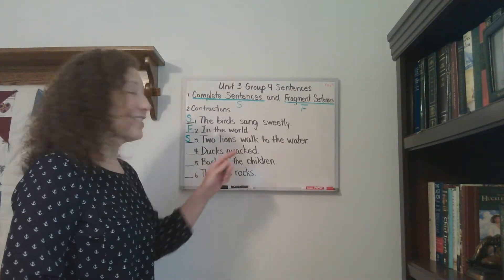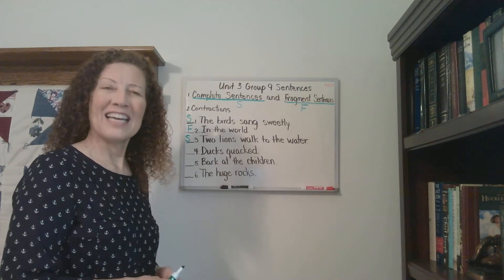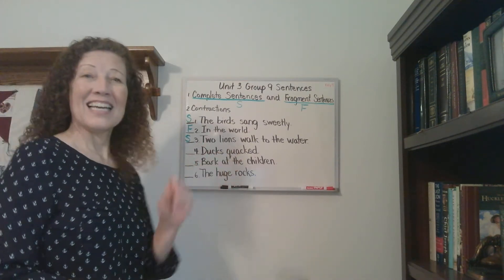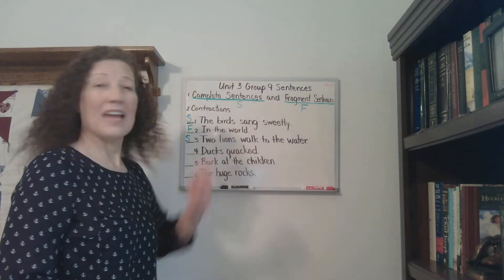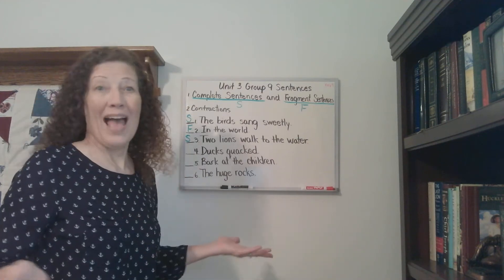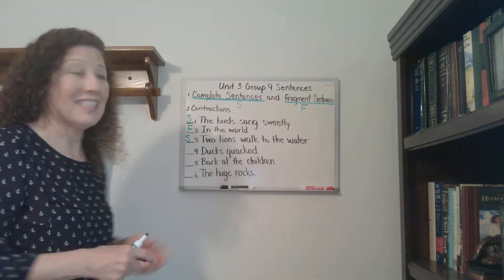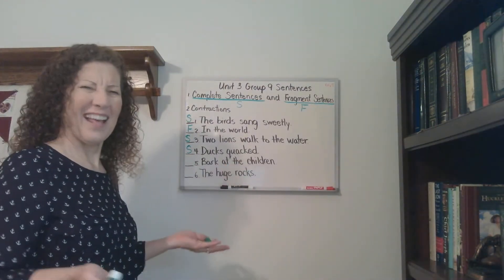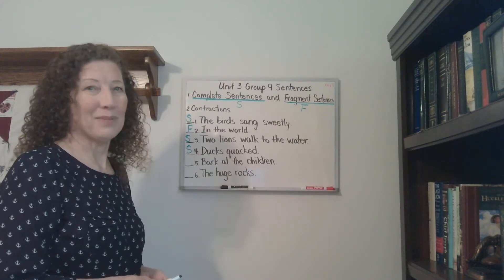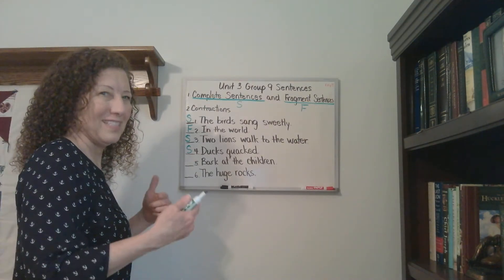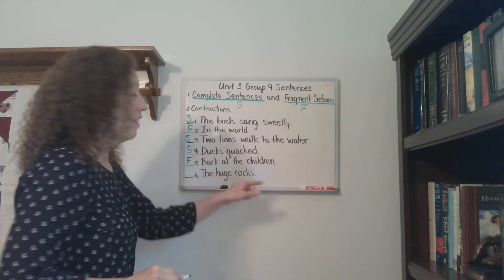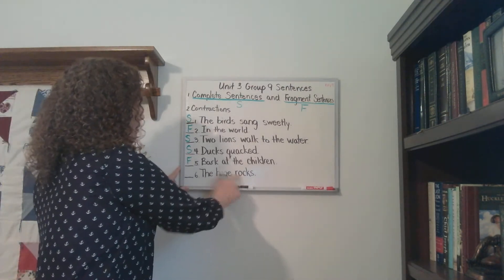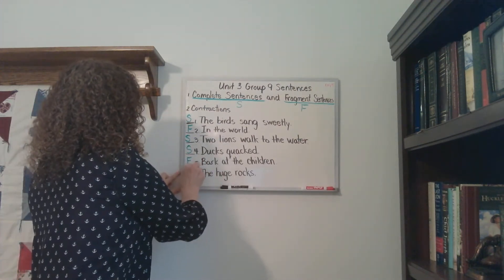How about the next one: Ducks quacked. That only has two words in it. Can a sentence only have two words? Well, if the words are a subject and a verb — ducks quacked. It has a subject, it has a verb, it has a capital letter, an end mark, it makes sense. Ducks quacked — we know what the ducks are doing. So this is going to be a complete sentence, an S. Next: Bark at the children — what barked at the children? That is not a complete thought, so that is F for fragment. The huge rocks — the huge rocks what? We don't know what they're talking about, so that is a fragment.